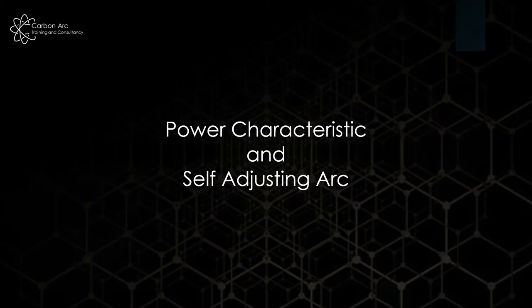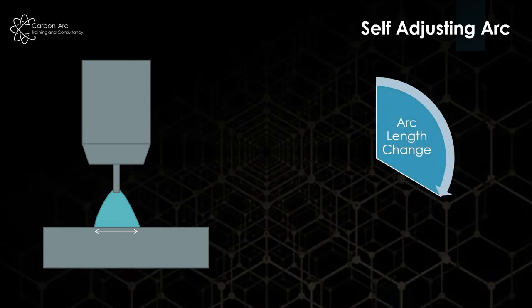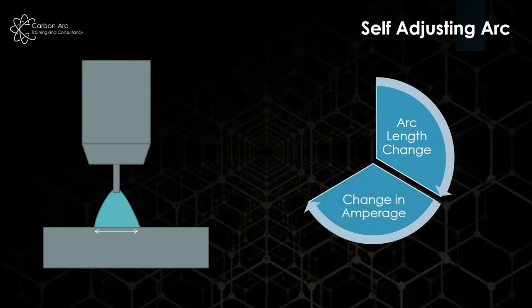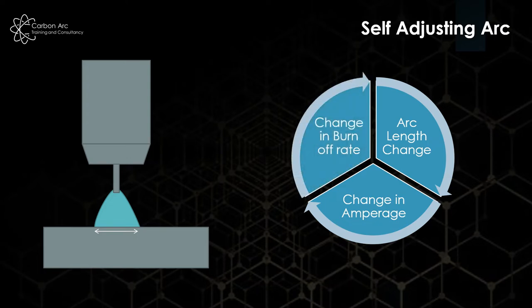In spray transfer, we can really control the consistency of the arc size by using the principle of self-adjusting arcs. When we look at a welding arc like here, what we're going to have is a change in arc length. That will drive a small change in voltage, which will have a larger change in amperage. And that amperage change will then affect the burn-off rate of the wire.